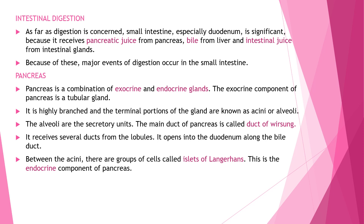Intestinal digestion involves three components: pancreatic juice entering the intestine, bile, and intestinal juice. These three are involved in intestinal digestion. Because of this, the major events of digestion occur in the small intestine.